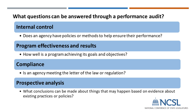What questions can be answered through a performance audit? Does the agency have policies or methods to help ensure their performance? We call this internal control. How well is the program achieving its goals and objectives? We're looking at effectiveness and results. Is the agency meeting the letter of the law or regulation? That's compliance. And finally, what conclusions can be made about things that may happen based on evidence about existing practices or policies? That's prospective analysis, or foresight.